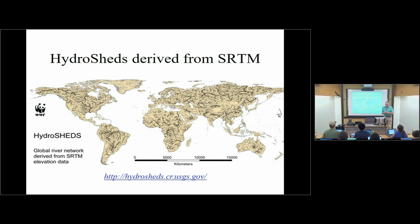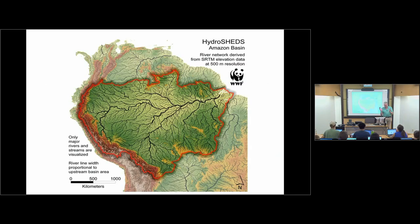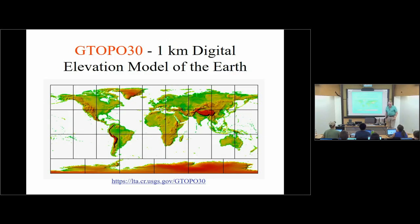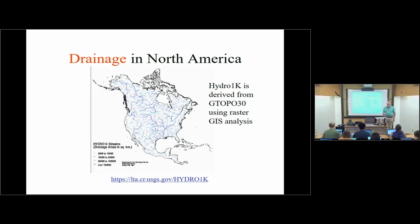There's HydroSHEDS derived from that — watersheds derived for the earth. So if you want to do a project in, say, Guatemala, somebody's already figured out roughly where the drainage areas are. Really beautiful cartography from the World Wildlife Fund — this is the Amazon. This is GTOPO30, a one-kilometer elevation model of the earth — good if you want to look at a big region like the Himalayas. Detailed data are hard to work with there, and a one-kilometer model gives a big-picture view that's quite helpful. This was the first global elevation model that existed, started about 20 years ago, and drainage has been derived from it for all the river basins of the earth.